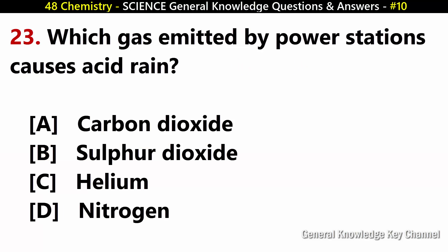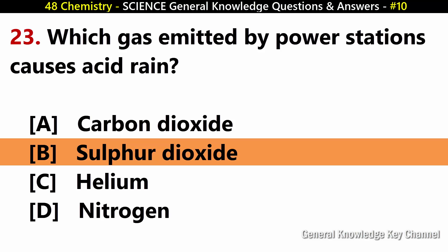Which gas emitted by power stations causes acid rain? Answer B: Sulphur dioxide.